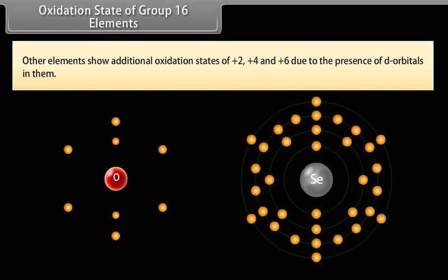Other elements show additional oxidation states of +2, +4 and +6 due to the presence of d-orbitals in them.